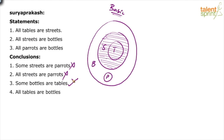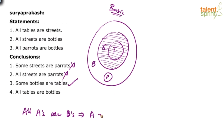It's easy. Always remember: look at the second statement — all streets are bottles. Now whenever you have a statement where it says all A's are B's, you can replace A with B everywhere. The converse is not true. When we say all A's are B's, wherever you have A, you can replace that with B — you can simply rewrite A as B. But you cannot write B as A. B is not equal to A. So you cannot say wherever we have B, we can write A. But wherever we have A, that can be replaced with B. So when he says all streets are bottles, streets can be replaced with bottles. Bottles cannot be replaced with streets.